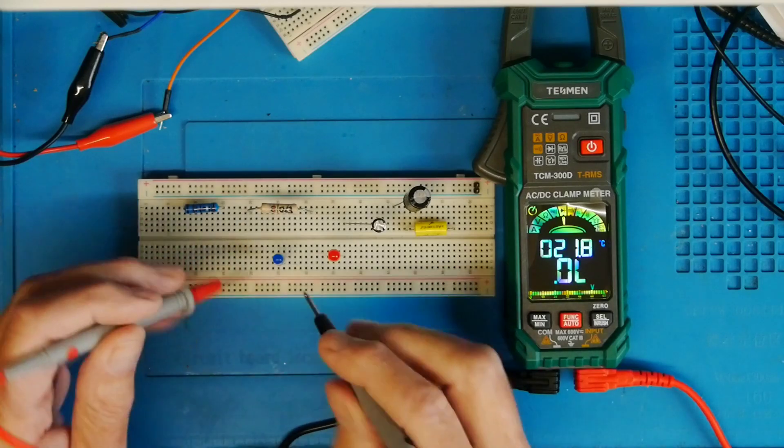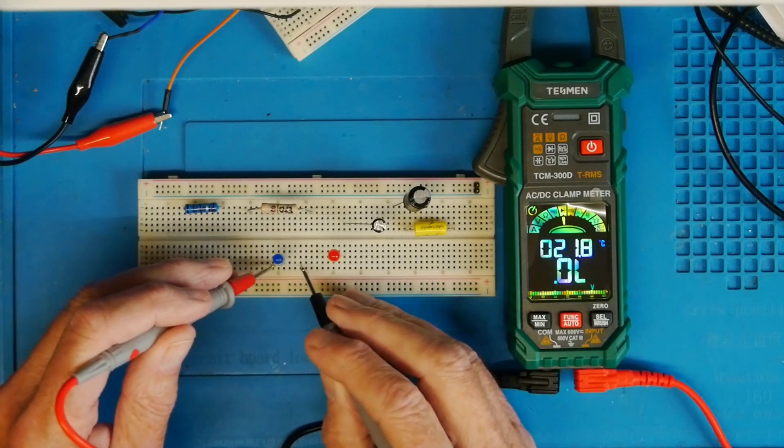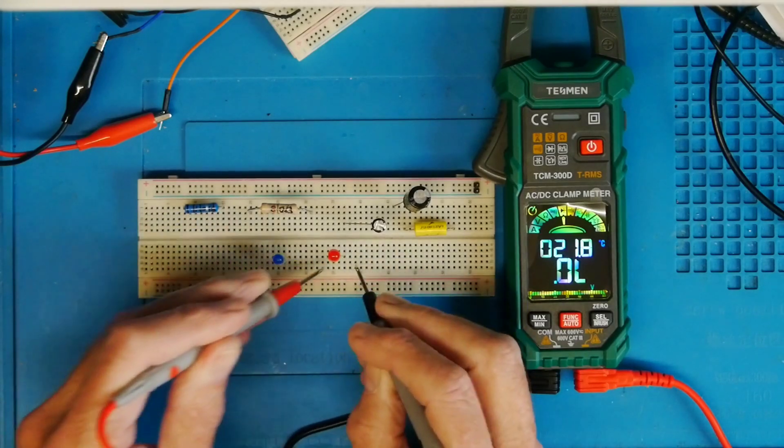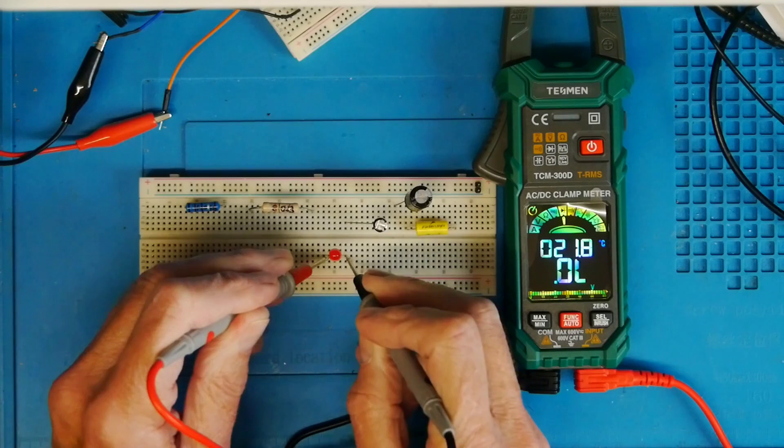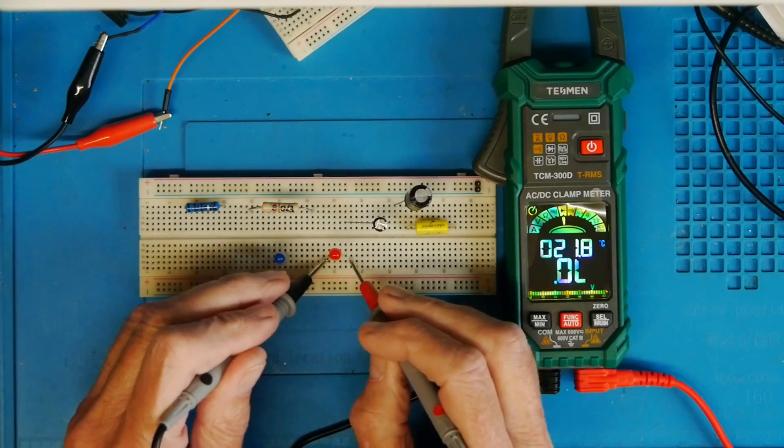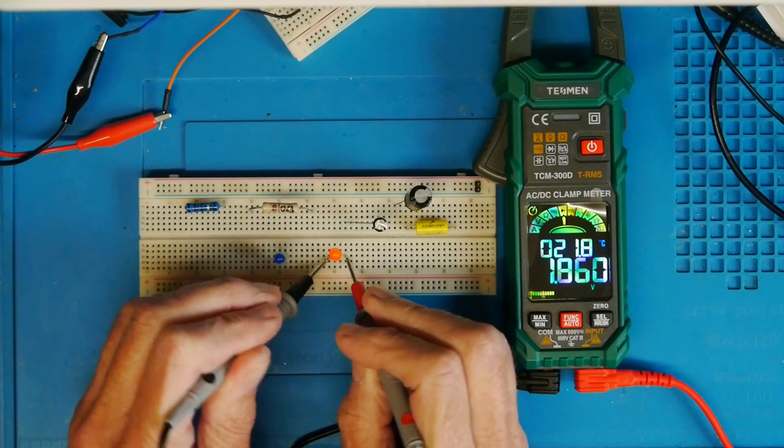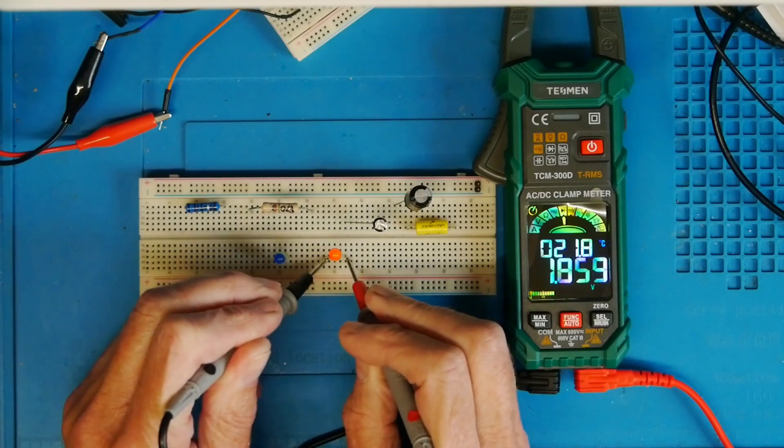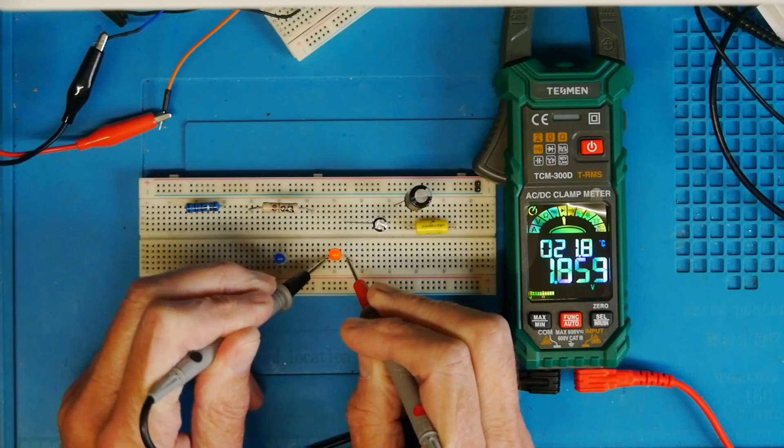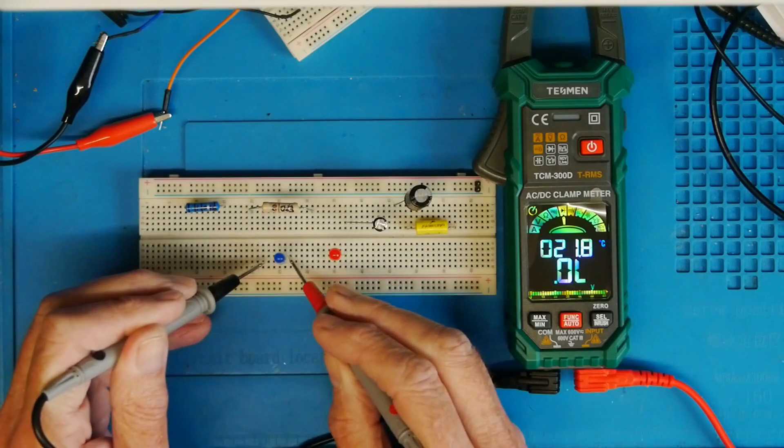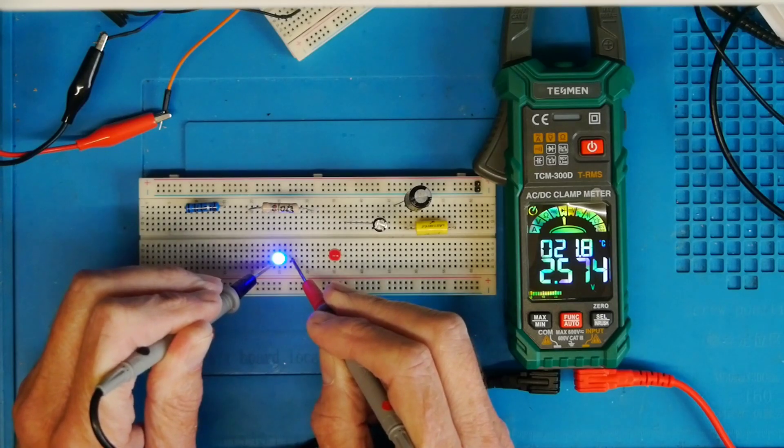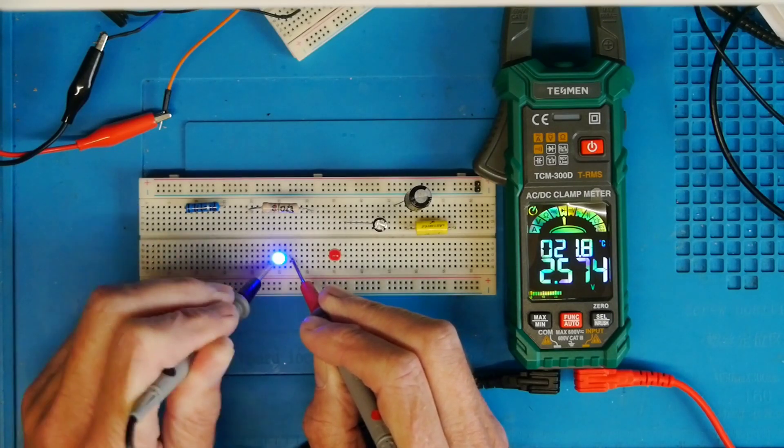Going to diode, we've got a couple of different LEDs here. Absolutely nothing there because I've reverse biased them. But if I swap the probes around to forward bias them, the red LED has a forward voltage of about 1.86, or 1.859 if you're fussy. I expect the blue to be a little higher. The blue is 2.574. So there are some of the more obvious features.